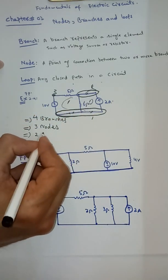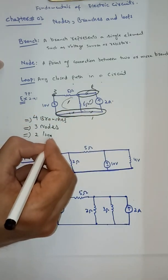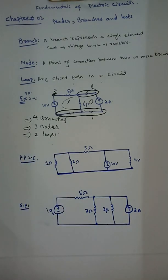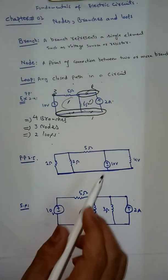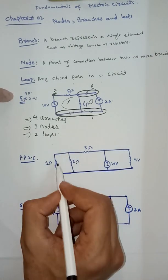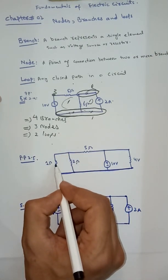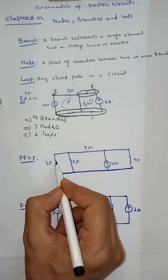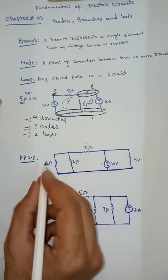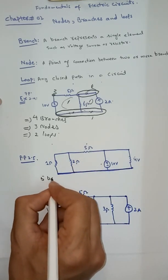And for loops — a loop is a closed path. We have two closed paths, so we have two loops. Similarly, in this next circuit, how many branches? Counting single elements: one, two, three, four, five — so five branches.